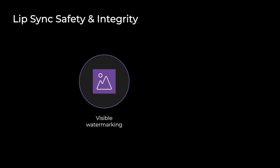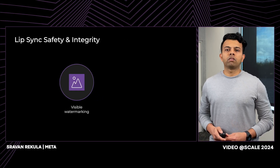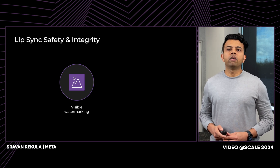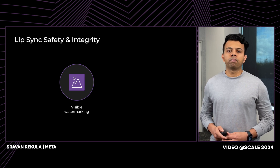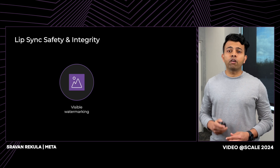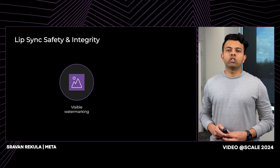At Meta, we prioritize safety and integrity in our product development life cycle. We have implemented two key measures. The first is a visual watermark, which has been integrated to inform users that a piece of media has been generated by AI. This watermark serves as a clear visual indicator, ensuring transparency and awareness about the origin of the media.